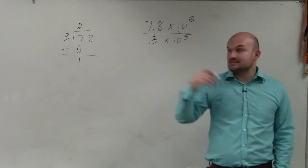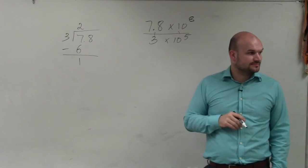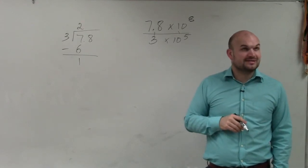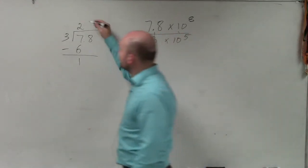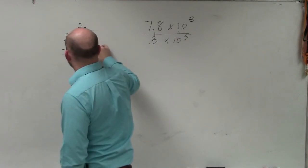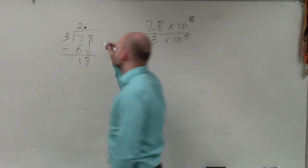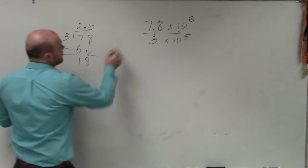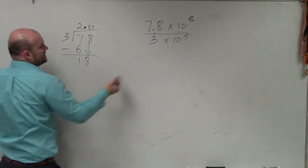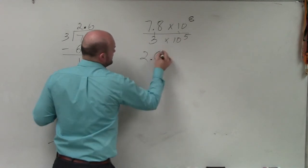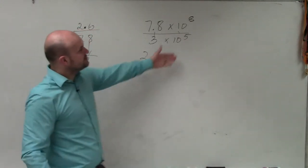However, ladies and gentlemen, 3 does not go into 1, right? So therefore, we have to create the decimal point. Bring down the next term, which is 8. 3 divides into 18, 6 times. So therefore, 7.8 divided by 3 is 2.6.